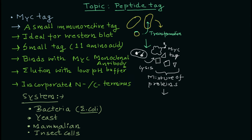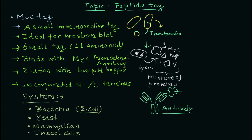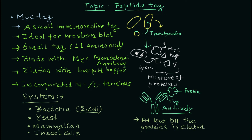Antibody binding with the specific antigen molecule is highly specific. The myc tag peptide sequence acts as the antigen, and in the column you have a slurry with the monoclonal antibody immobilized. The tagged protein gets trapped in the column. When you change the pH — decreasing the pH — the binding affinity is reduced and the protein gets eluted. This is how you use this tag to purify your protein of interest.